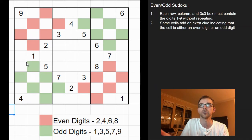So in this case, all of the red cells here are going to be even digits. So 2, 4, 6, or 8. And the green cells are going to be odd digits, 1, 3, 5, 7, or 9.